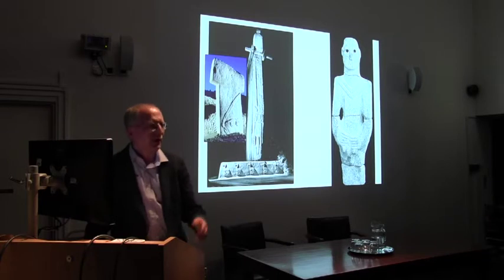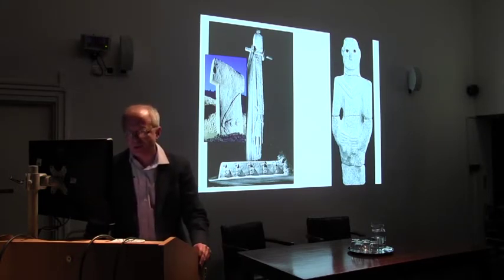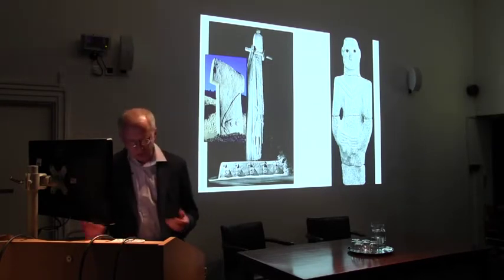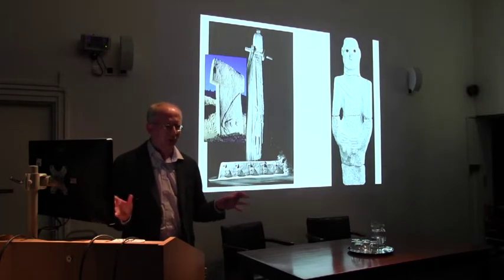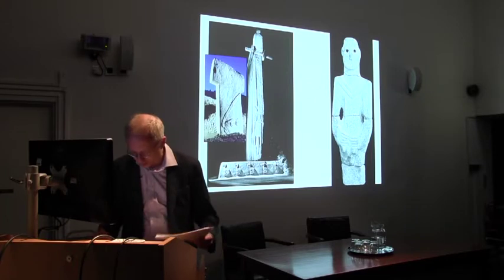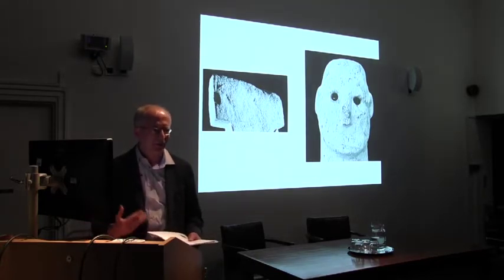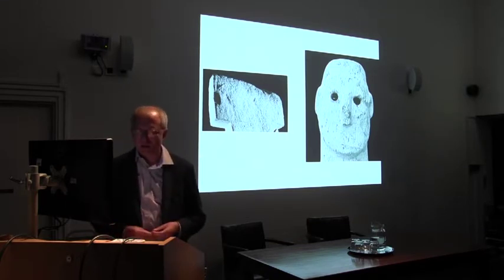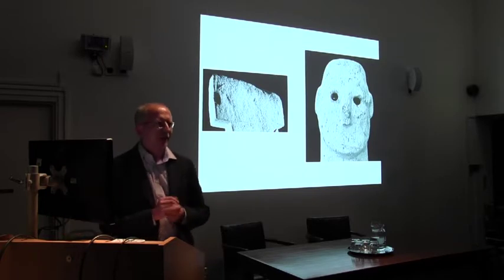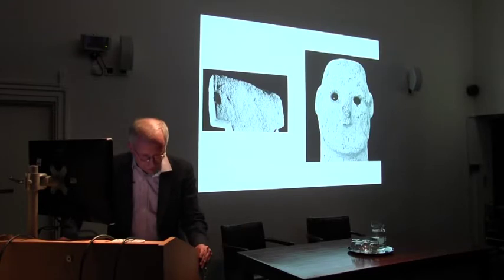Let me briefly go back to the other one — it's quite important because these pillars are not easy to recognize as schematized representations of the human body. But if you look here, this is an arm, and we know various examples from these pillars where the hands are shown as well. So this is the body and this is the head. This is probably also of interest for art historians — that we have here this kind of very early cubist representation of a human body, and in particular the human face.